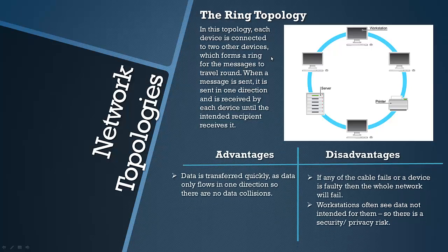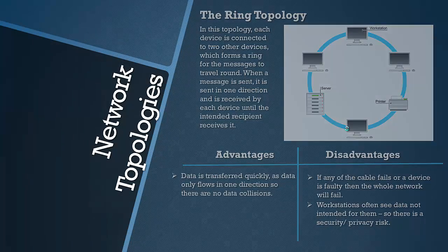An advantage of the ring topology is that data is transferred quickly because data only flows in one direction, so there's no chance of data collisions. However, if any cable fails or a device is faulty, the whole network will fail — the message will never reach its intended recipient. Another disadvantage is that workstations do see data not intended for them, so there is a privacy risk.